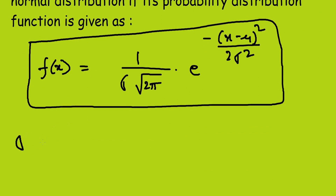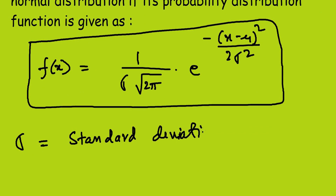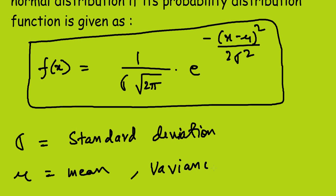Important things to note here: σ equals standard deviation, μ equals mean, and variance equals σ².